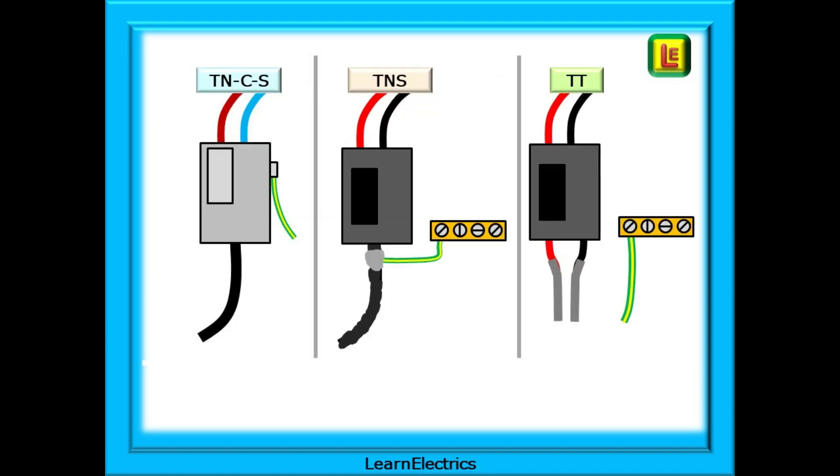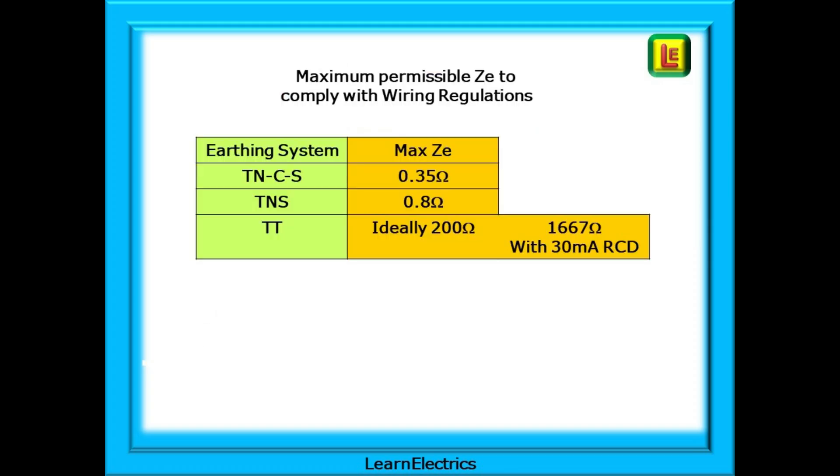These three simple drawings are the intake positions and cutouts for the three earthing systems in the video. Please take the time to understand these and improve your ability to recognise each type. And the maximum permissible ZE reading for each type is shown here. This is basic information. You need to get it right. You will be writing this on the test certificates and putting your name against it.